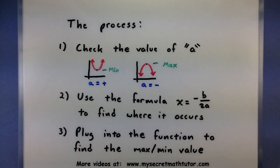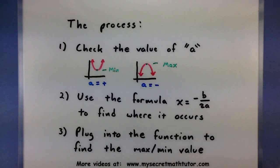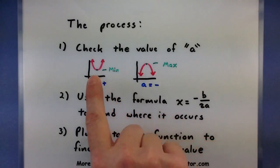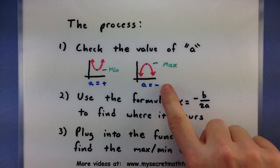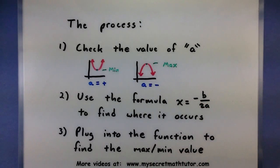To figure out the maximum or minimum of a quadratic, the very first thing we need to do is check its 'a' value — the coefficient in front of the x squared term. This will tell us whether the quadratic is facing up or down. If the coefficient in front of x squared is positive, then our quadratic is facing up, meaning it takes on a low value and will have a minimum. If however that 'a' value is negative, then our quadratic is facing down and it has a maximum value.